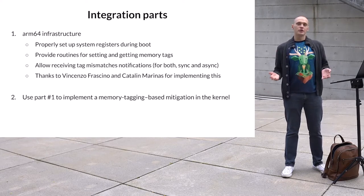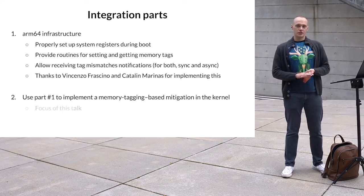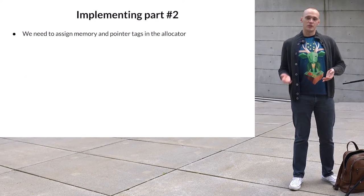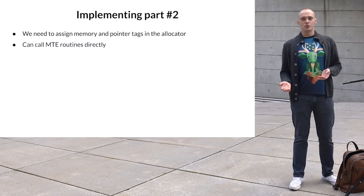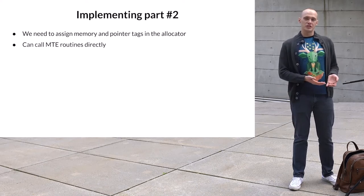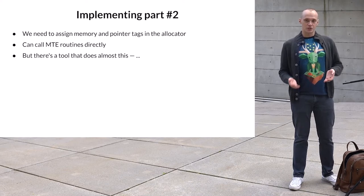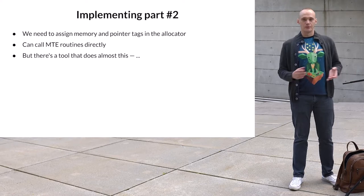The other part is about taking the routines provided by the architecture part and using them in the kernel — for example, making kernel allocators tag memory and pointers. This is what I worked on and what we will discuss right now. To implement this part, we need to change the implementation of kernel allocators. The simplest approach would be to call MTE routines from the allocator code. However, if you start looking for places where these routines should be called, you will keep stumbling upon call sites of another tool called KASAN.